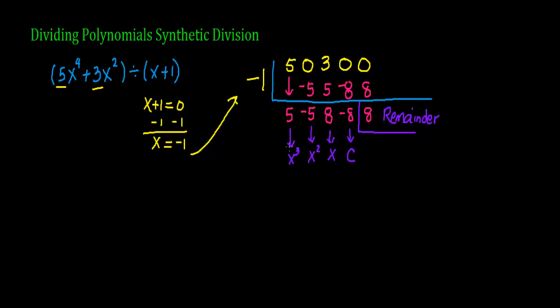So this first one here becomes 5x to the third power. Negative 5 means minus 5x squared. Then I have a positive 8, so that's plus 8x. Then I have a negative 8, that means minus 8, and that's your constant term. Plus our remainder, which is 8, divided by our divisor, which is x plus 1.